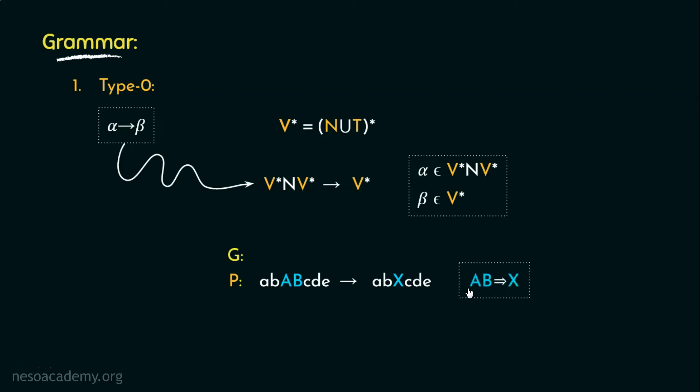So, basically, uppercase A, b is deriving uppercase X in association with the left context, that is lowercase a, b and the right context, lowercase c, d, e.